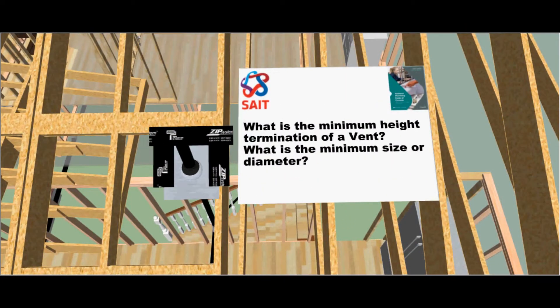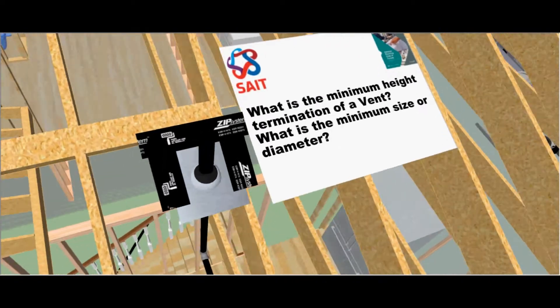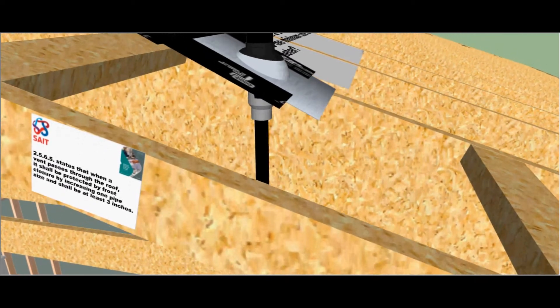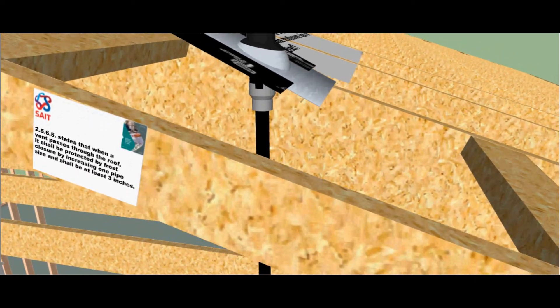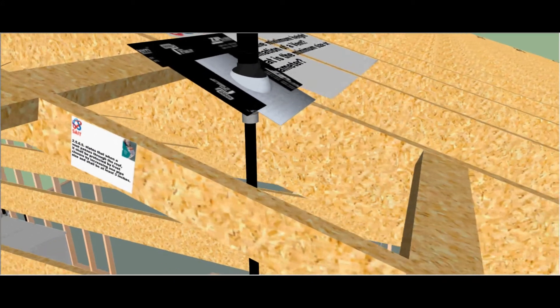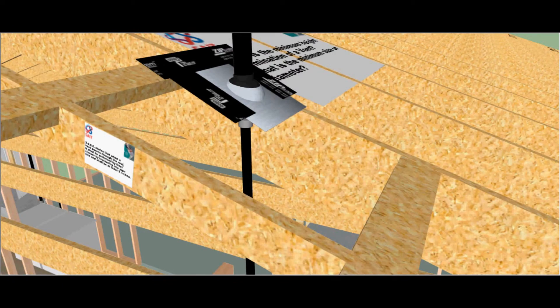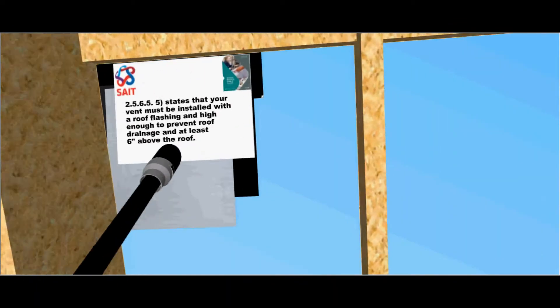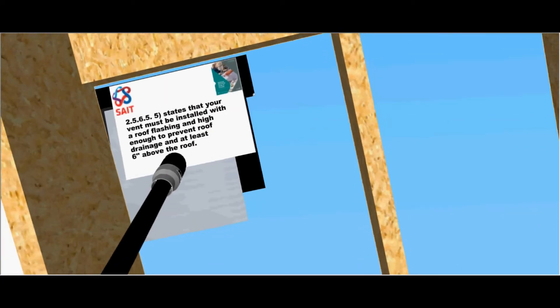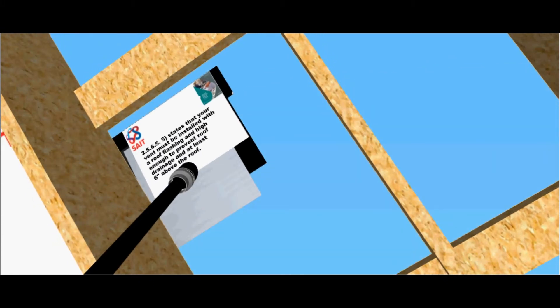What is the minimum height termination of a vent? What is the minimum size? Clause 2565 states that when a vent passes through the roof it shall be protected from frost closure by increasing one pipe size and it shall be at least three inches in diameter. Clause 2565 also states that a vent must be installed with a roof flashing high enough to prevent roof drainage and at least six inches above the roof.